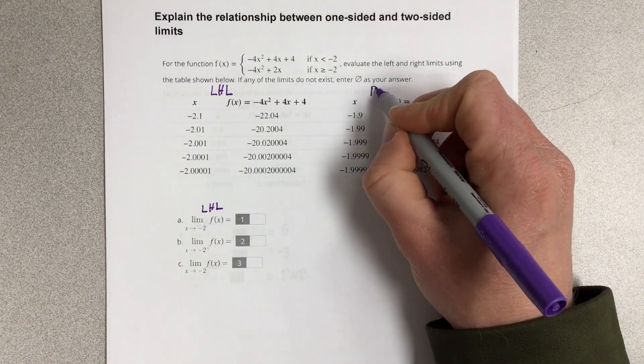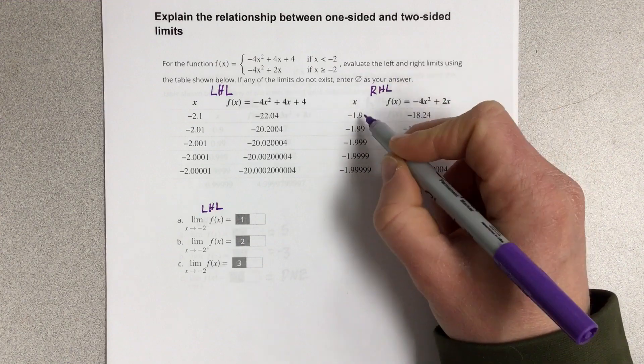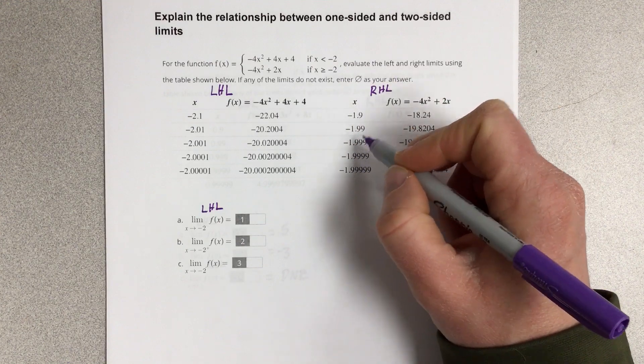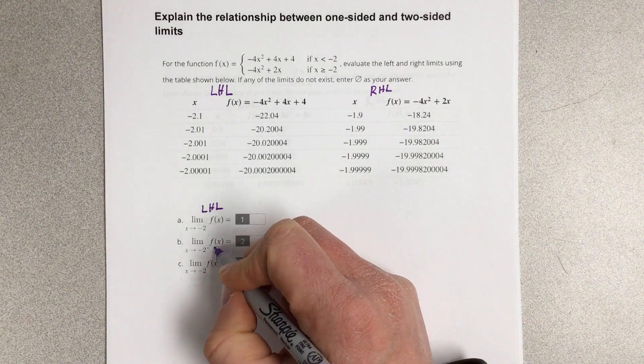And the other side would be the right-hand limit, because these values are bigger than negative 2. And so, we're going to call this the right-hand limit.